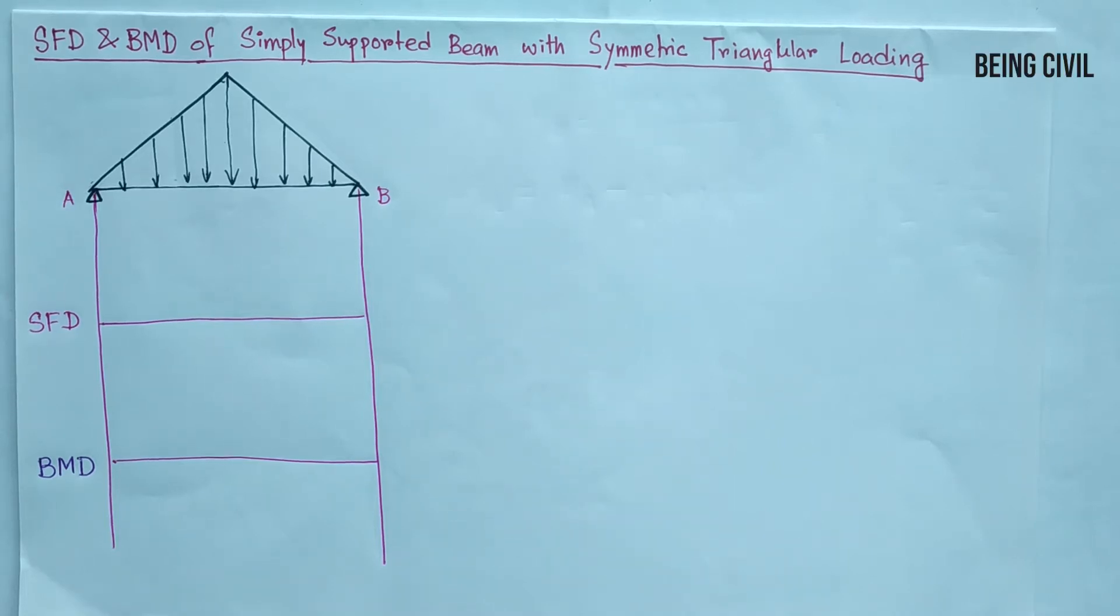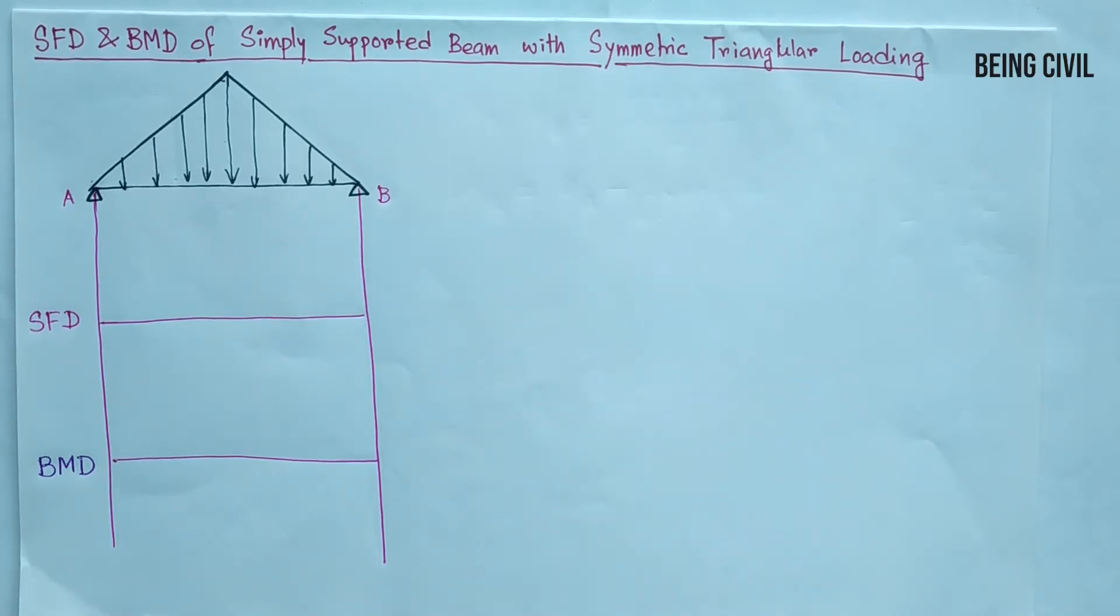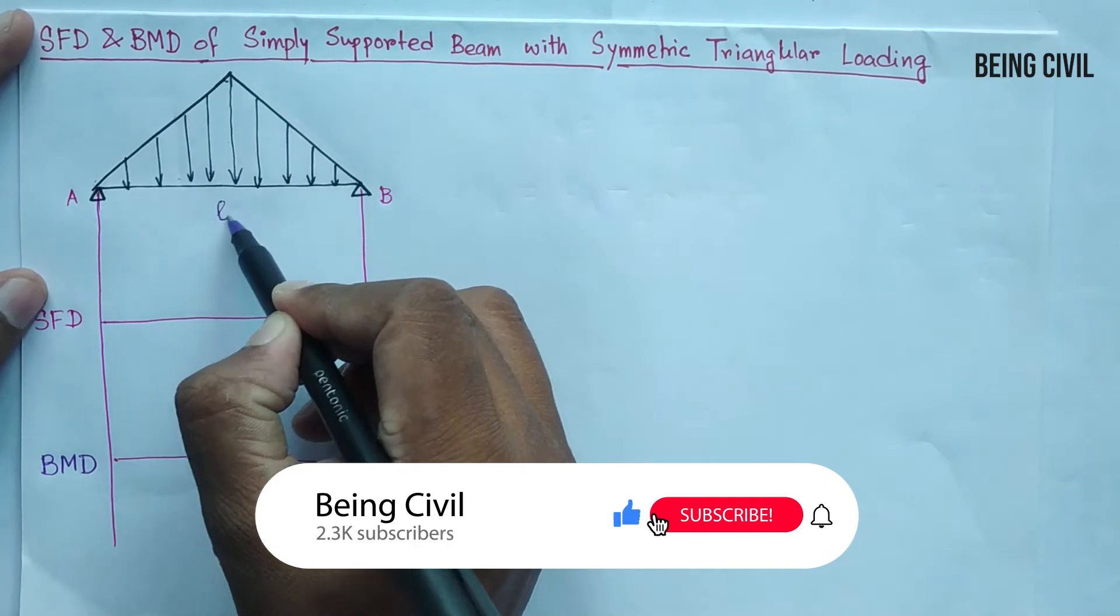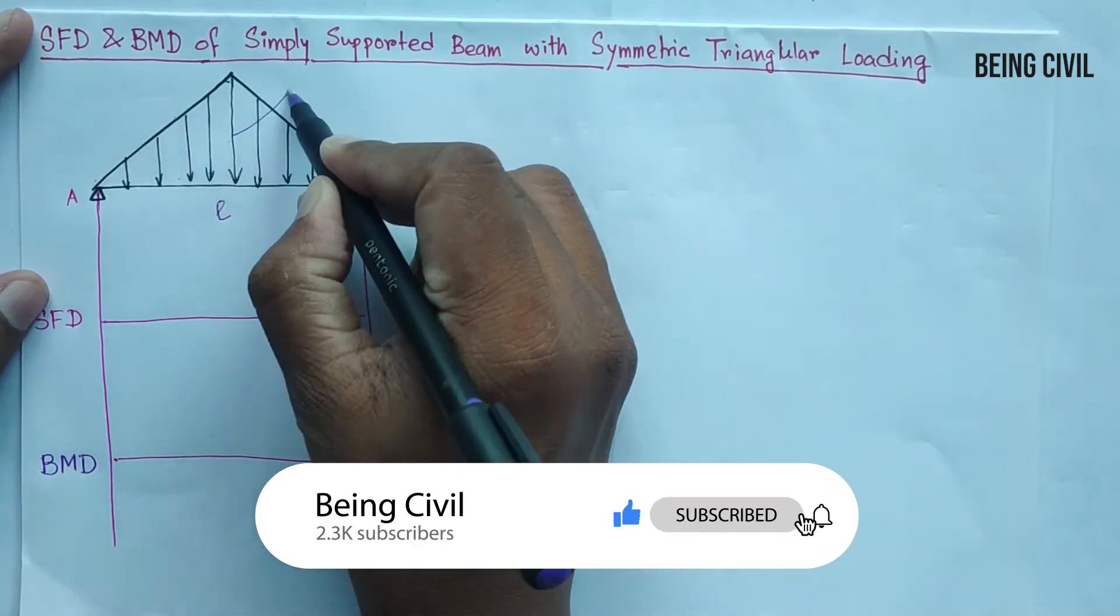Hello everybody, welcome to Being Civil. In this video we'll do an example of SFD and BMD of a simply supported beam with symmetrical triangular loading. This is our beam AB of length L and maximum loading is here at the midpoint which is W.